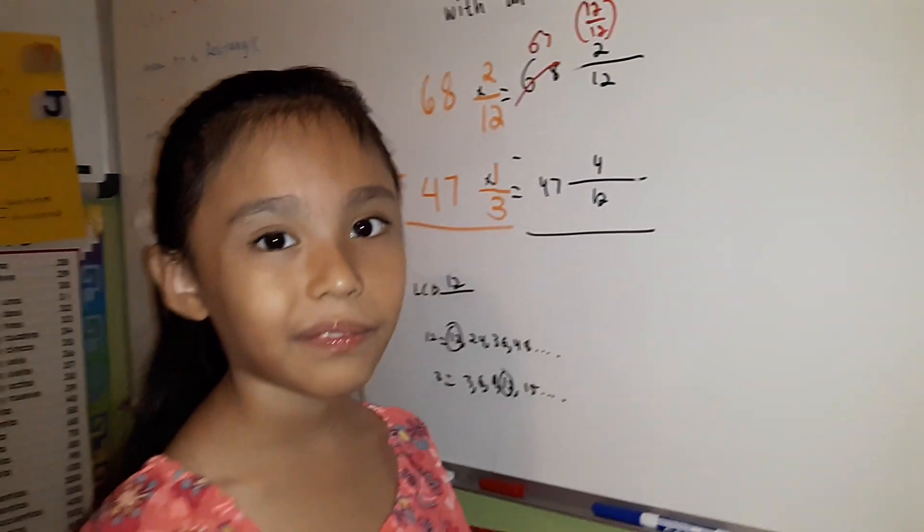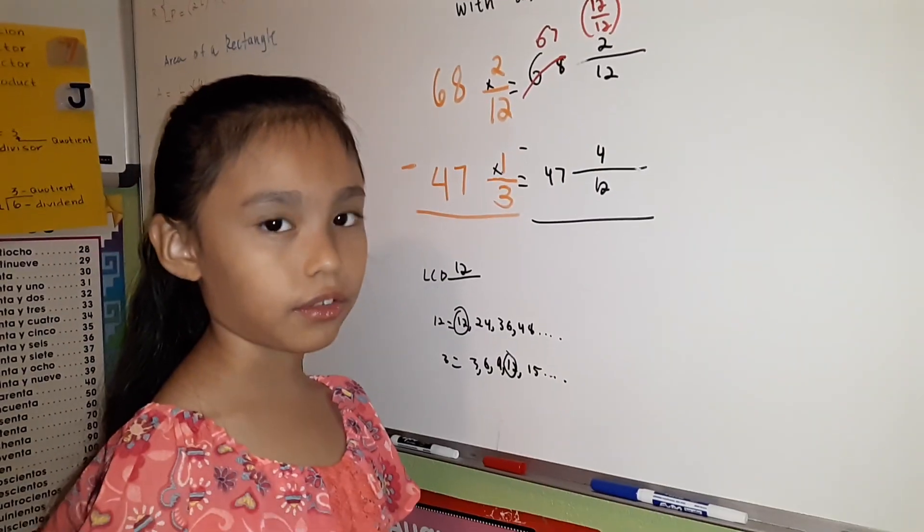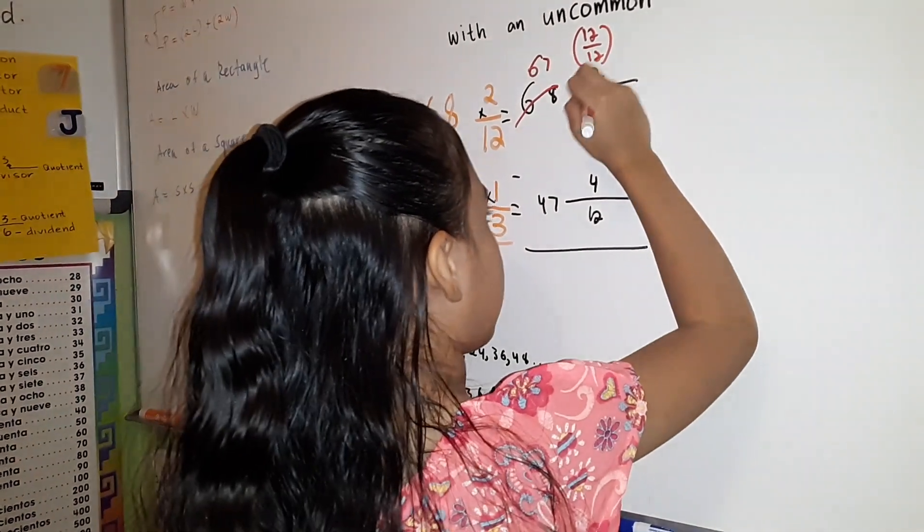Why do we use 12/12? Why not 11/11, or 4/4, or 8/8? We use 12/12 because our denominators are 12.